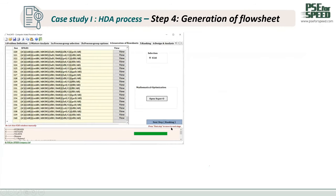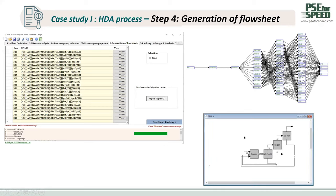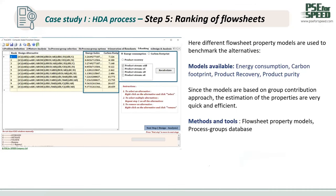Then we click Next. The program will use the information of the process group and generate the flow sheet systematically, like atoms and molecules, stored in the form of the S file — the nomenclature for the flow sheet in the same way as SMILES for molecules. The list of alternatives will be presented; the user can click Open Superstructure to view the superstructure, or click View to show the flow sheet of each alternative in the ICAST program. Then we proceed to step five, where the program screens and ranks alternatives using available models such as energy consumption, carbon footprint, product purity, and product recovery.